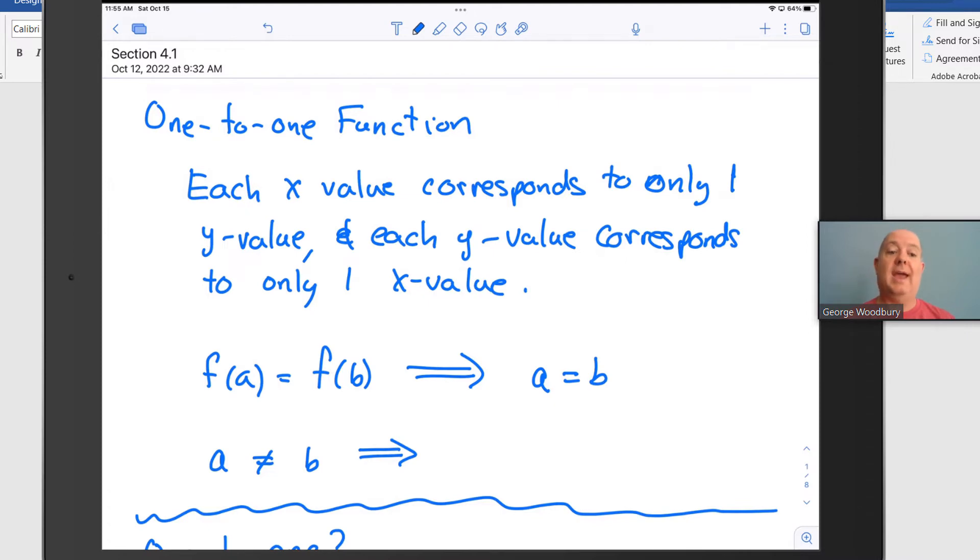Also, if we know that a and b are different, then we also know that f(a) cannot be equal to f(b). That's the contrapositive.